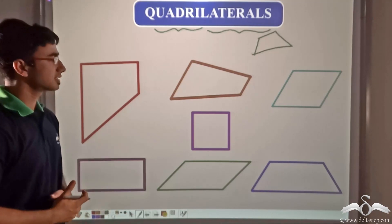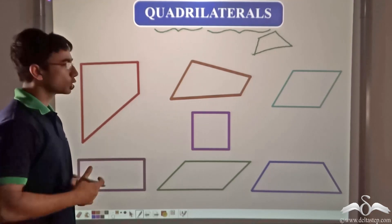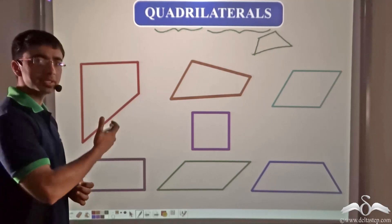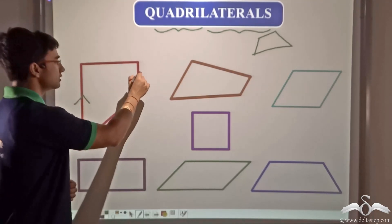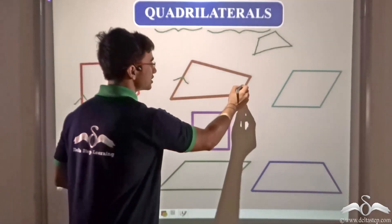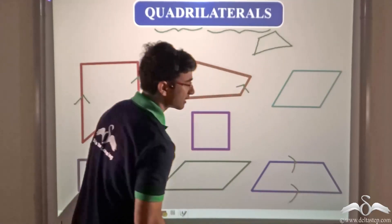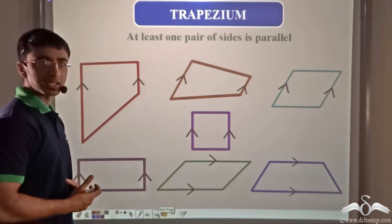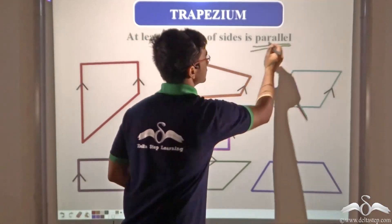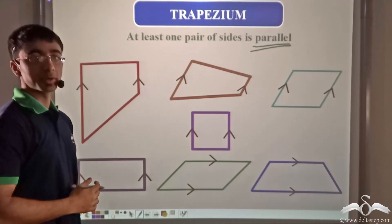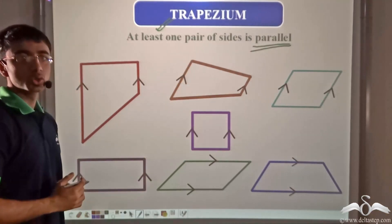Looking at the quadrilaterals shown on screen, you will find they have opposite pairs of parallel sides. For example, in each of these quadrilaterals, one pair of sides is parallel. All these quadrilaterals have at least one pair of sides parallel to one another, and they are known as trapezium.